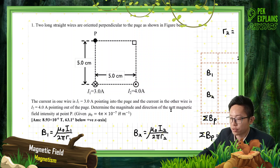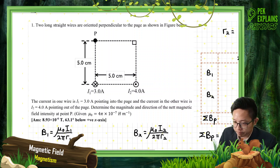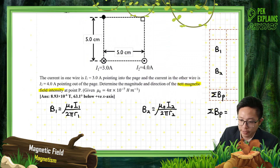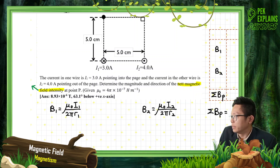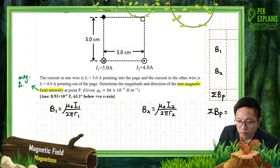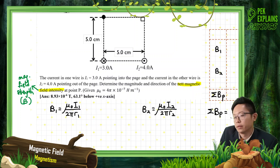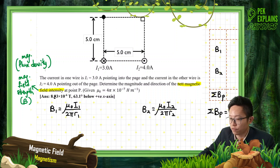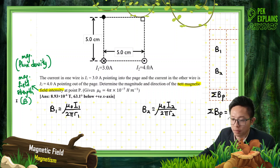Determine the magnitude and direction of the net magnetic field intensity at point P. What is magnetic field intensity? This is actually the same as magnetic field strength, symbol B. You can also call it magnetic flux density. So it has several names — magnetic field intensity, magnetic field strength, magnetic flux density — all mean the same thing, B.